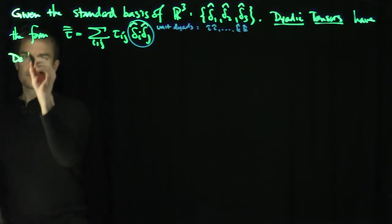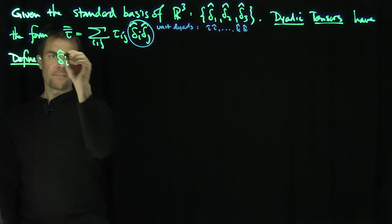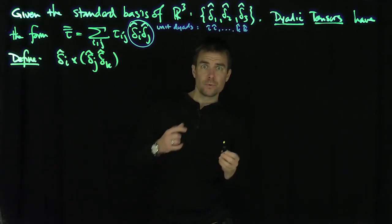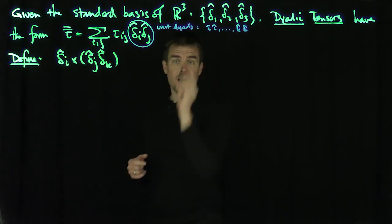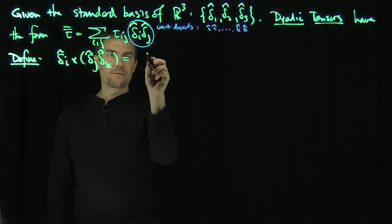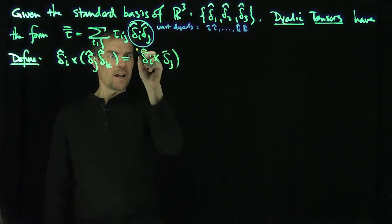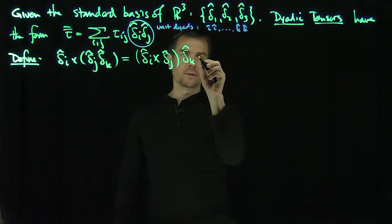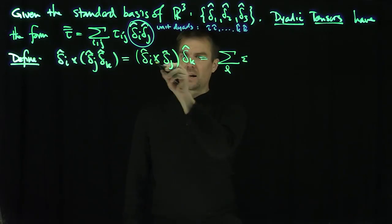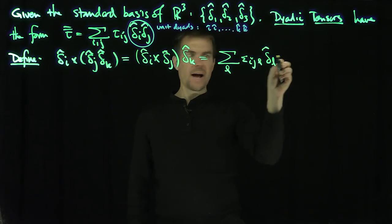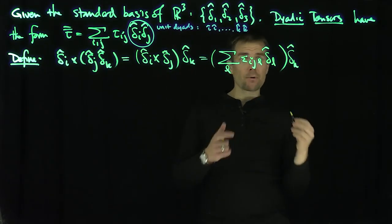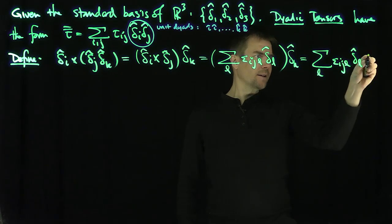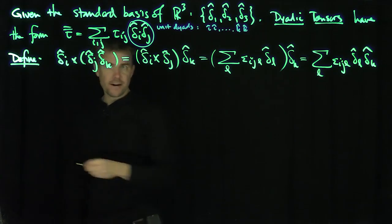Let's define an operation: delta_i cross (delta_j delta_k). In other words, I'm going to define how to do the cross product of a standard basis vector with a standard unit dyad. By definition, this is (delta_i cross delta_j) in the direction of delta_k. Now, delta_i cross delta_j is the sum over l of epsilon_ijl times delta_l-hat, and this is times delta_k. So the outer product gives us the sum over l of epsilon_ijl times delta_l-hat delta_k-hat. That's how I cross a vector with a dyadic tensor.